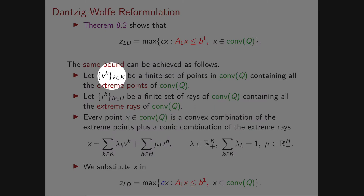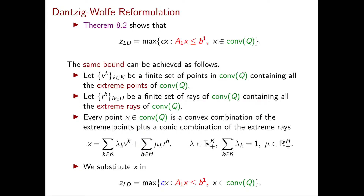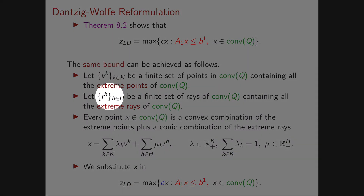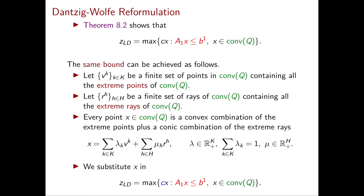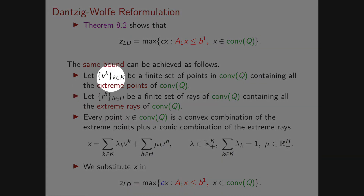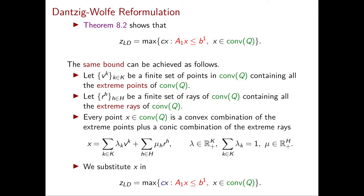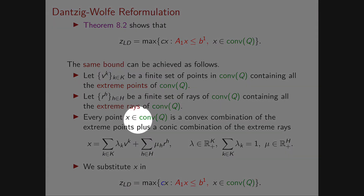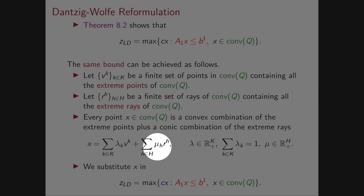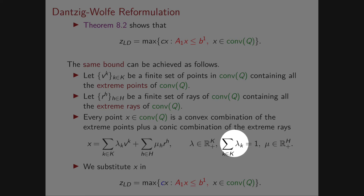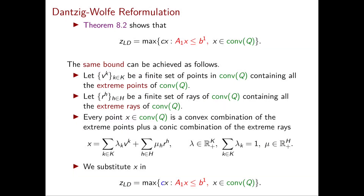Let v_k for k in K be a finite set of points in conv(Q) that contains all the extreme points of conv(Q), and let r_h for h in H be a finite set of rays that contains all the extreme rays of conv(Q). These sets can be larger than just the extreme points and extreme rays. Any point in conv(Q) can then be written as the sum of λ_k v_k plus the sum of μ_h r_h, where the λ's are non-negative and sum to one (convex combination) and the μ's are non-negative (conic combination).